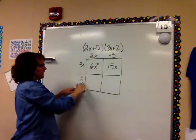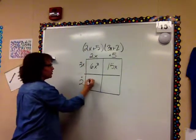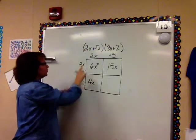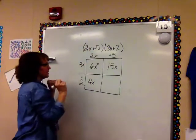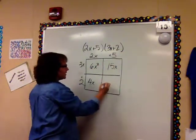I'm also going to multiply down here. 2 times 2x, which is just 4x. 2 times 2 is 4 times x is 4x. 2 times 5, which is 10.